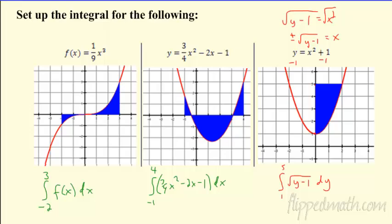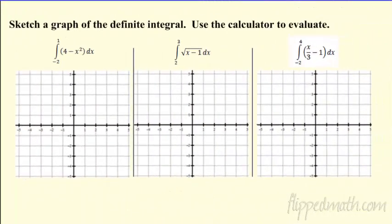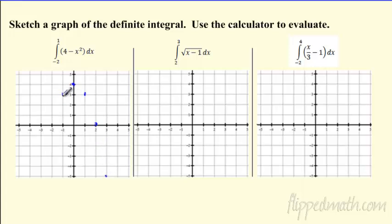That won't come up until later when we do solids of revolution, but integrals can be with respect to y or t or whatever variable you're working with. Now I want you to be able to sketch some basic functions. Something like 4 minus x squared — this is a parabola, opens down, crosses at x equals 2. Parabolas follow the 1, 3, 5 rule: down 1 over 1, down 3 over 1, down 5 over 1. At least get those first two points to get a rough idea.